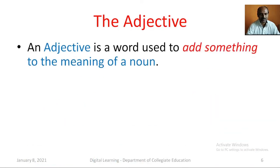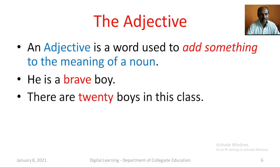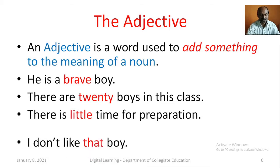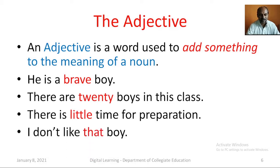The Adjective. An adjective is a word used to add something to the meaning of a noun. For example: He is a brave boy. There are twenty boys in this class. There is little time for preparation. I don't like that boy. Here, brave, twenty, little, and that — these are all adjectives.